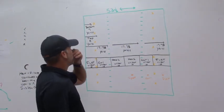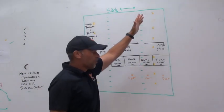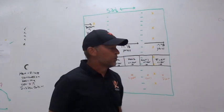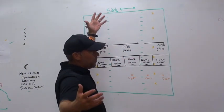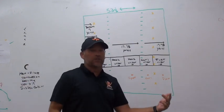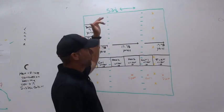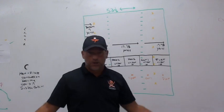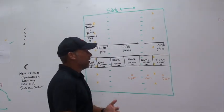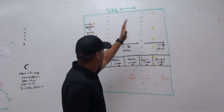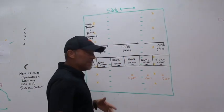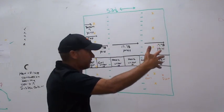I think everybody safe to say understands that a football field is 53 and a third yards wide, which is about 160 feet. If you've played or coached football long enough, you know 53 and a third yards is always the strangest number, but today we're just talking about dimensions and width.